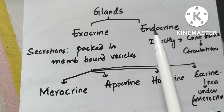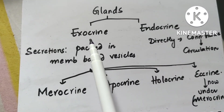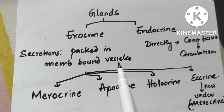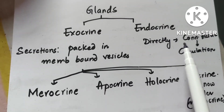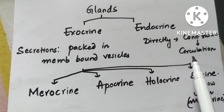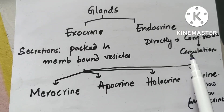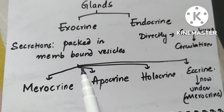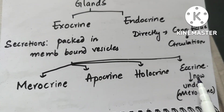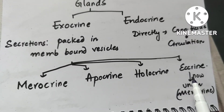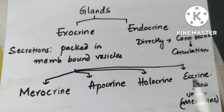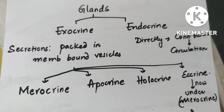Coming to the topic proper of today which is exocrine glands — exocrine glands have their secretions packed in membrane-bound vesicles, whereas endocrine glands secrete them directly into the connective tissue and from there into the circulation. The examples of exocrine glands are merocrine, apocrine, holocrine and eccrine. Eccrine gland was previously classified separately but now it is included under merocrine itself.